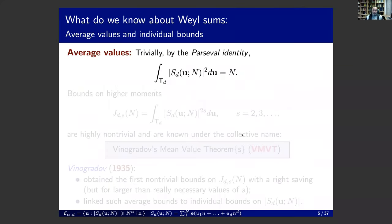Let me first explain what we know about Weyl sums, and then we'll talk about things we do not know. Our knowledge can be classified into two classes: average values and individual bounds. Starting with average values — you can trivially prove the average square, which is nothing but a Parseval identity, a completely trivial result.